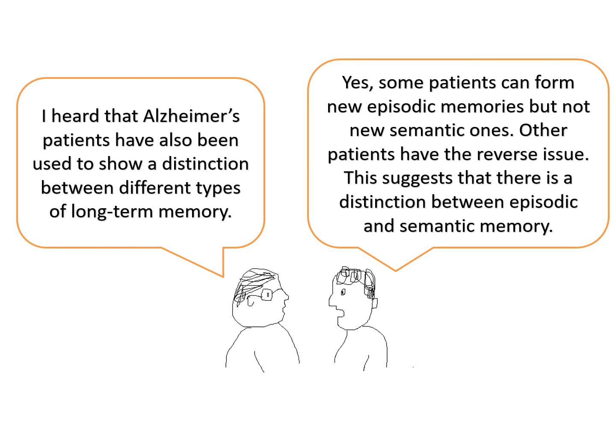Alzheimer's patients have also been used to show a distinction between different types of long-term memory. Some patients can form new episodic memories but not new semantic ones. Other patients have the reverse issue, and so this suggests that there is a distinction between episodic and semantic memory.